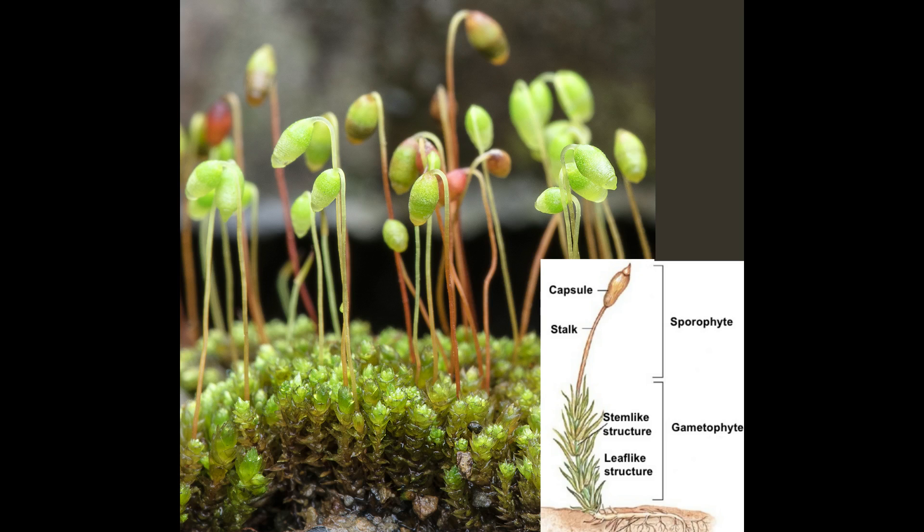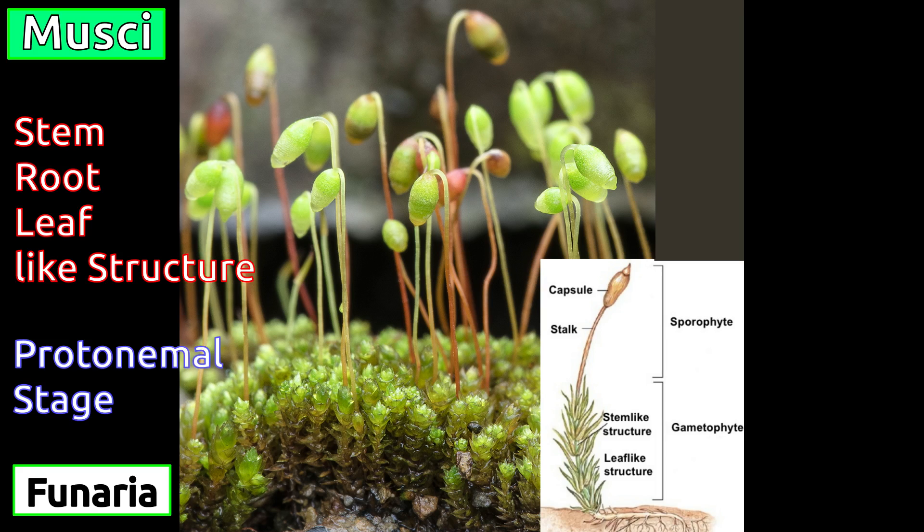In the Musci class of bryophytes, the plant is differentiated into root, stem, and leaf-like structures. Plants in this class go through the protonema stage during reproduction. Funaria plant is an example of a Musci bryophyte.